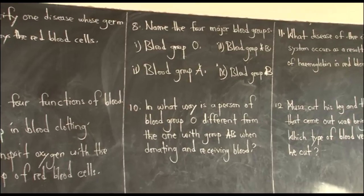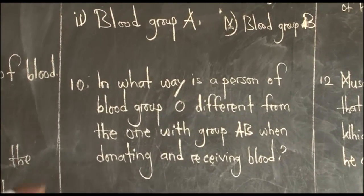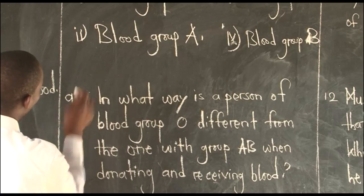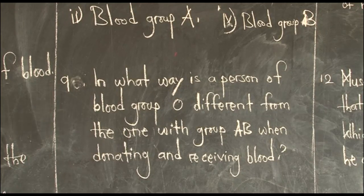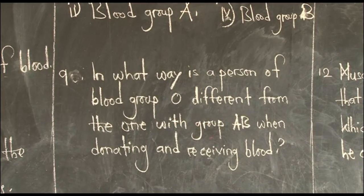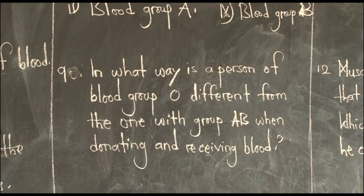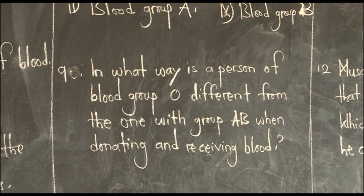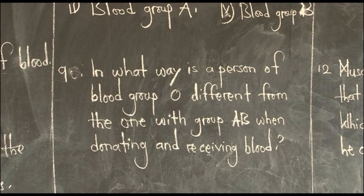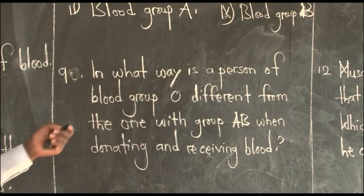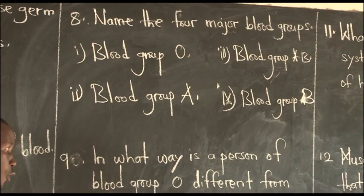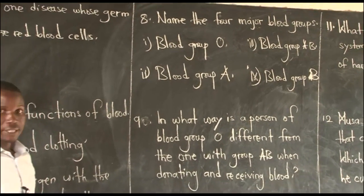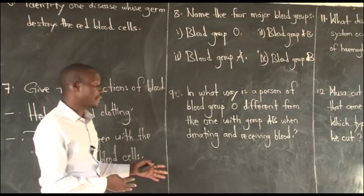Then a person with blood group AB can receive from all — they are a universal blood recipient or universal recipient. They can ask you: why is blood group AB referred to as a universal recipient? Simply because it can receive blood from all other groups. So for number nine, we are asked: in what way is a person of blood group O different from one with blood group AB when donating and receiving blood? From the idea here, blood group O is a universal donor — can give blood to all blood groups — and blood group AB is a universal recipient — can receive from all.